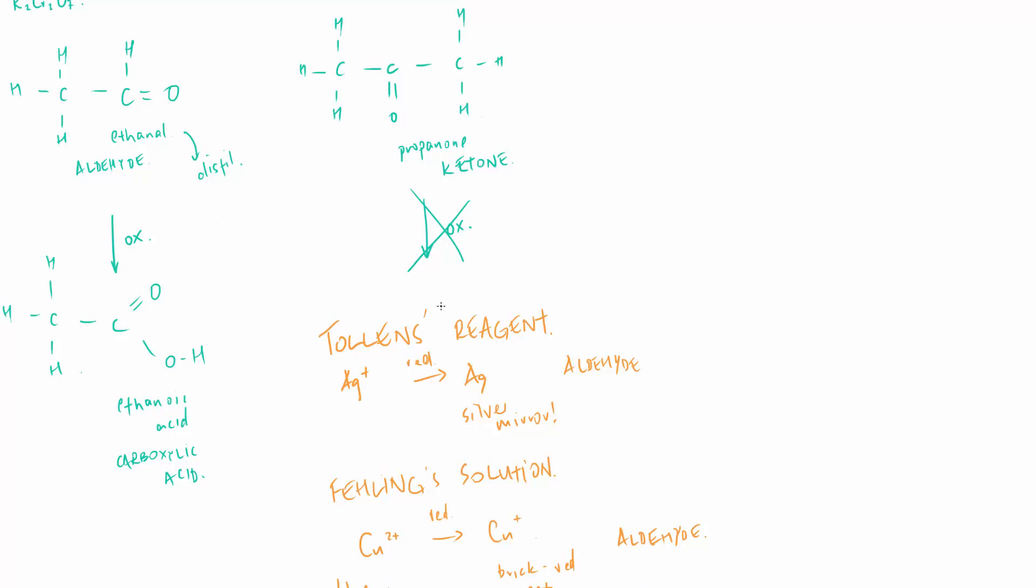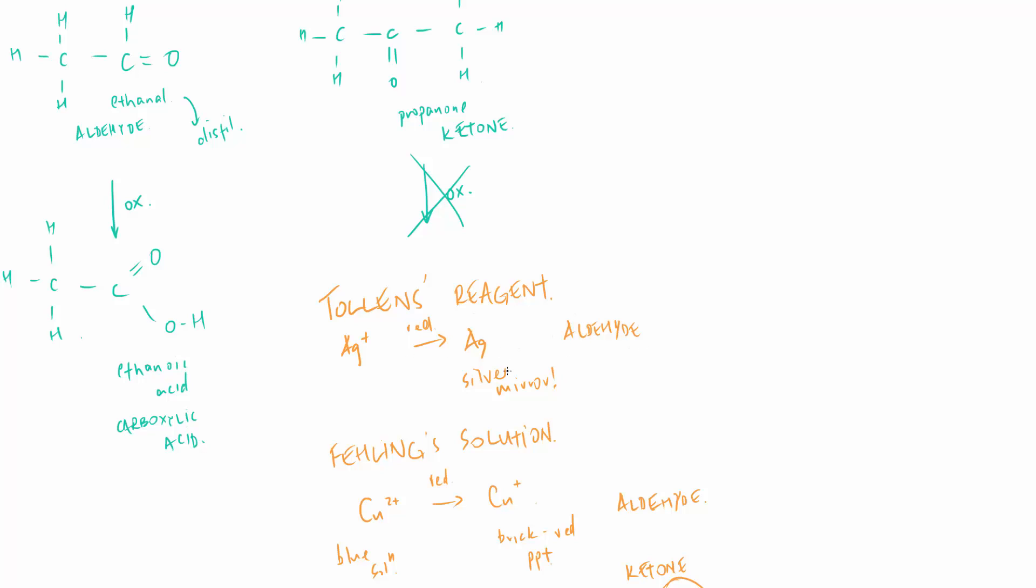We've got these two alcohols, one's primary or secondary. We run the tests, we find that it does give a silver mirror once we've distilled off our oxidation product. That would tell us that it is a primary alcohol. If there was no result, it would have told us that it was a secondary alcohol to start with. We can use it as a form of analysis, which is quite nice.